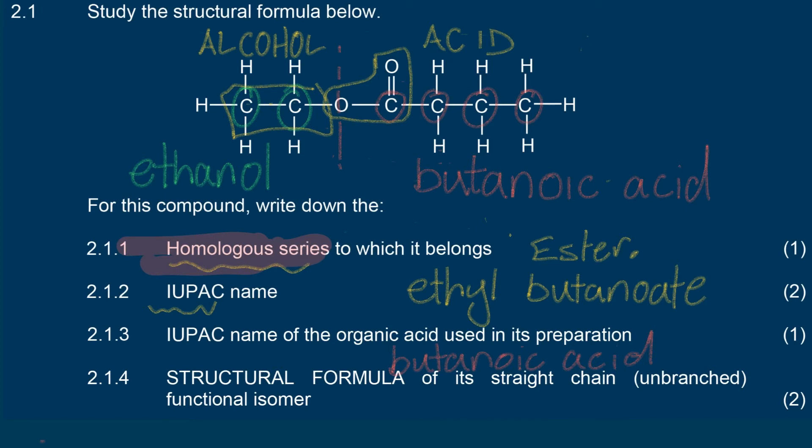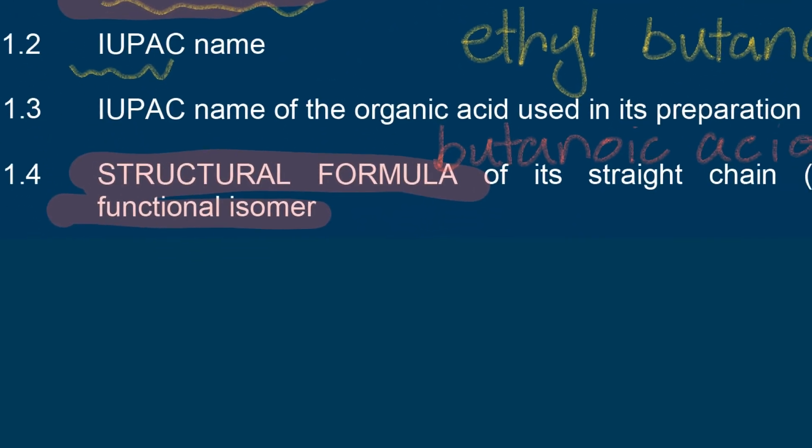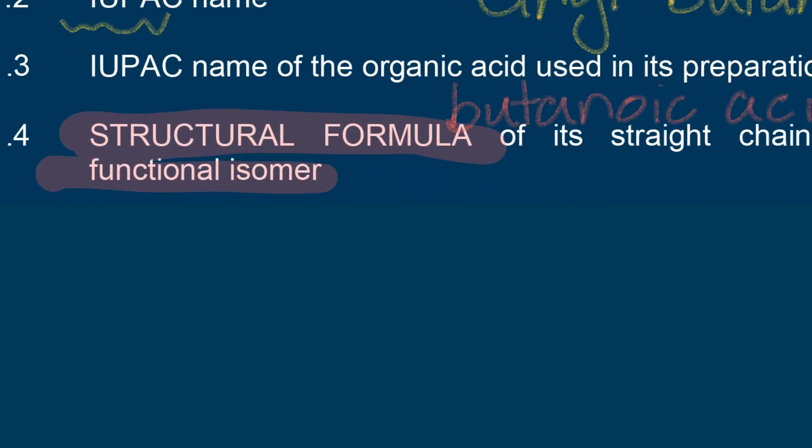They would like to know the structural formula of its straight chain or unbranched functional isomer. This is where things get a little bit tricky. We need to start taking a very careful look at what they mean. They would like a structural formula and they would like to know a functional isomer. Now a functional isomer is pretty tricky because what a functional isomer will do is it will actually change the functional group and therefore the homologous series.